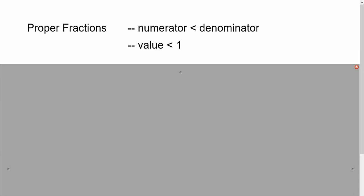We know that proper fractions are fractions where the numerator is less than the denominator. So an example of that would be like 3 fourths. The top is smaller than the bottom and that means that it's a number that's less than one, right?